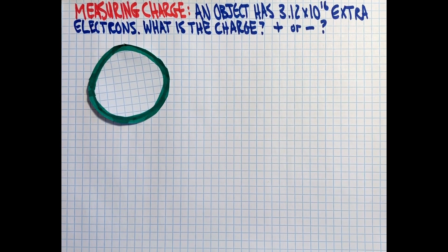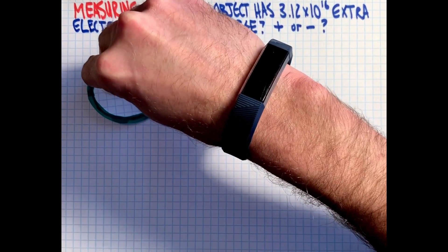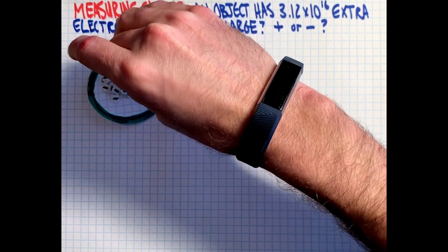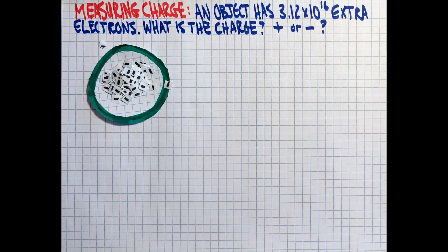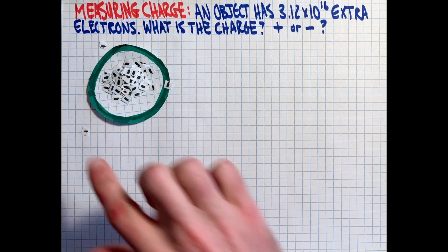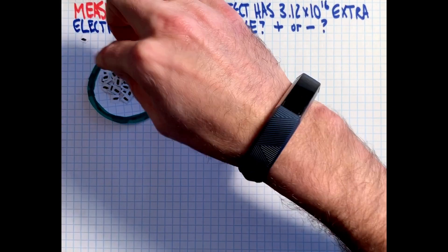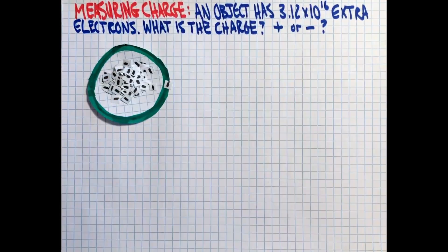So if I have a neutral object here, and I give it a whole bunch of extra electrons, quite a pile here, if I gave them 6.24 times 10 to the 18 extra electrons, then we would have one Coulomb of negative charge.